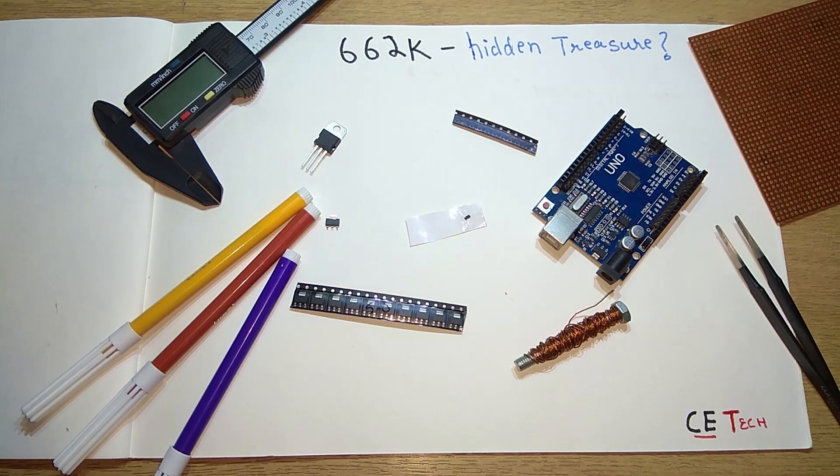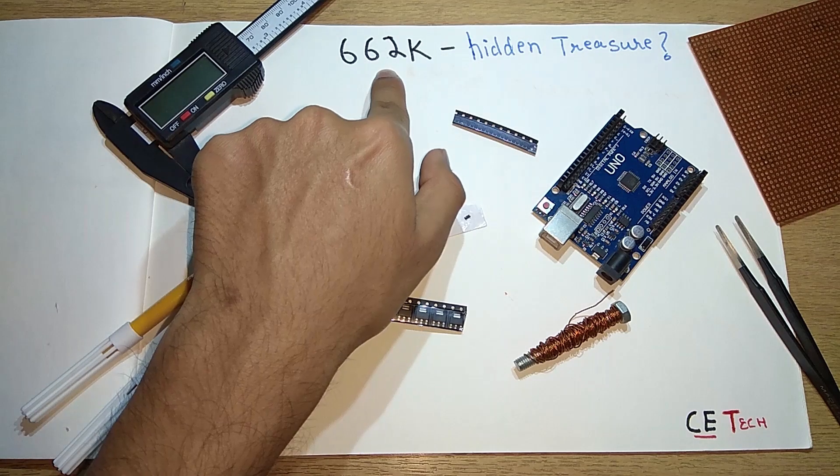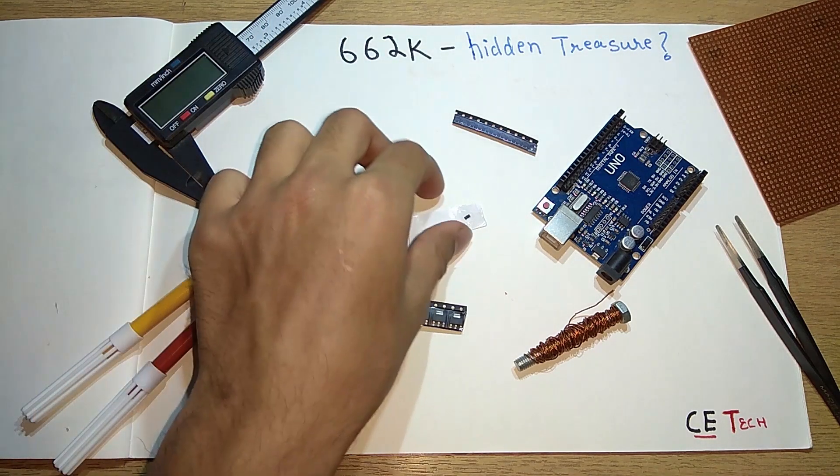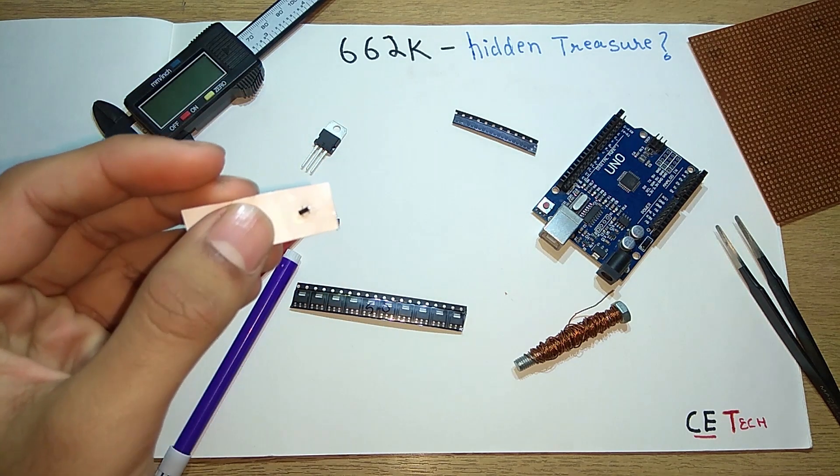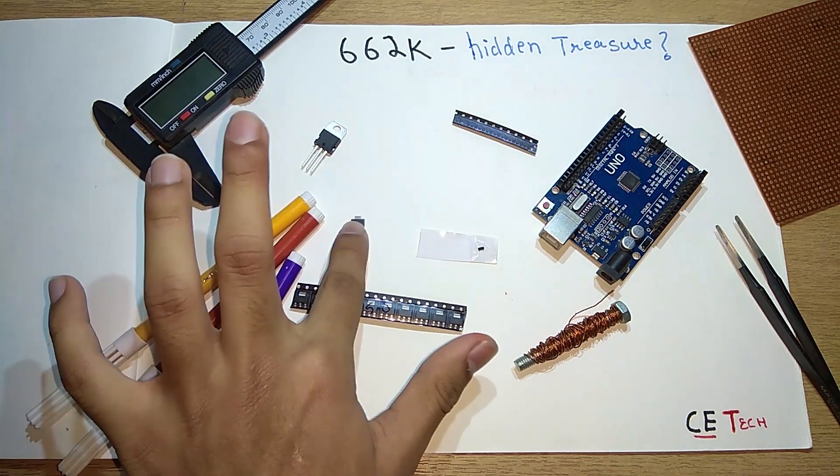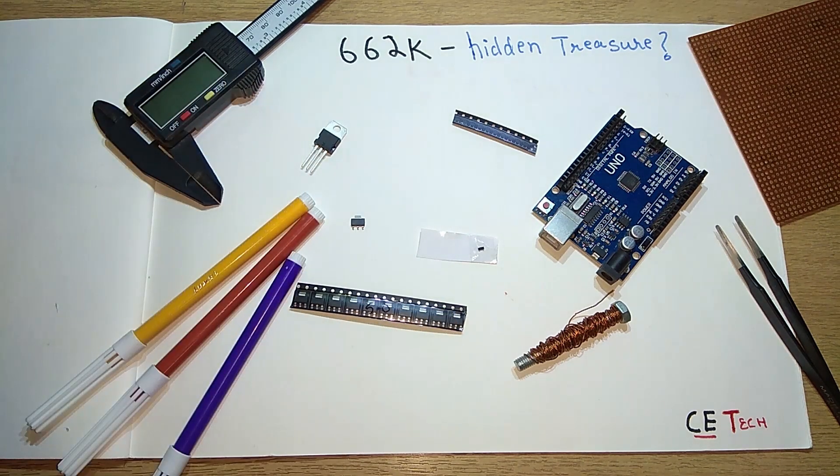Hey, what is up guys, Akarshi back with another video. I recently got to know about the 662K—it's a linear dropout voltage regulator. We'll take a look at it in today's video, although taking a look will be difficult because of its size. We'll be comparing it to the famously used 1117 voltage regulator and maybe the 705 also. Let's get started.